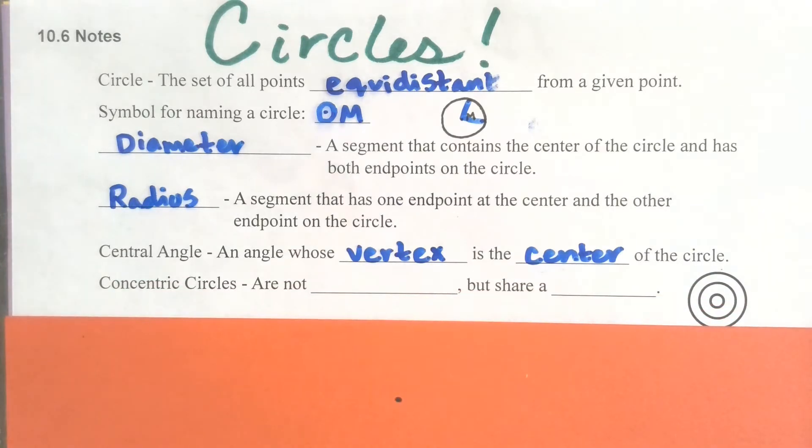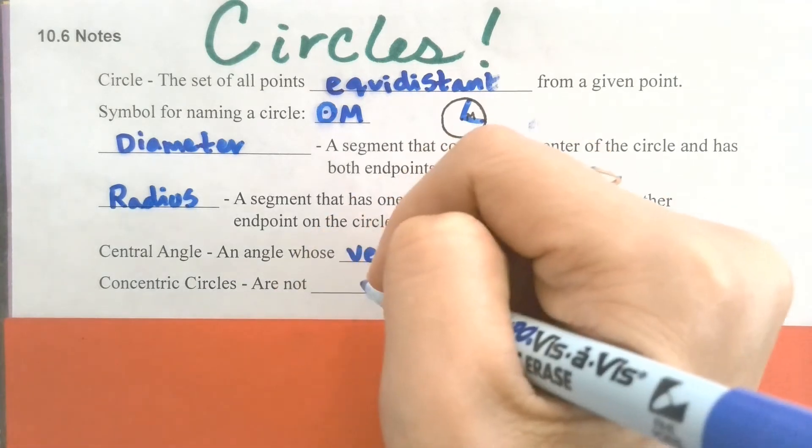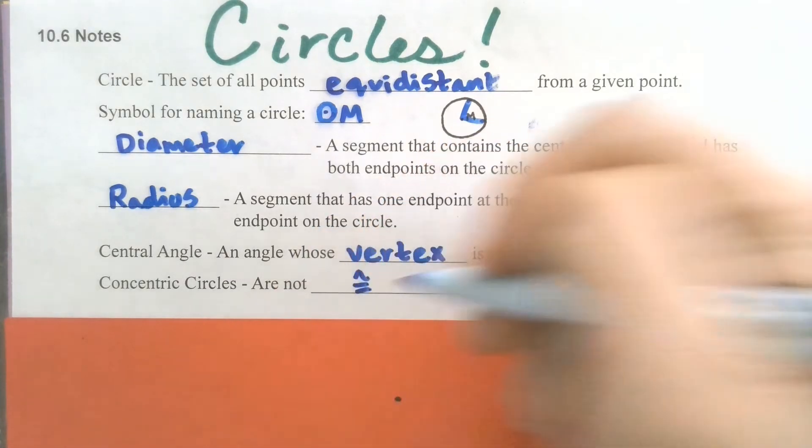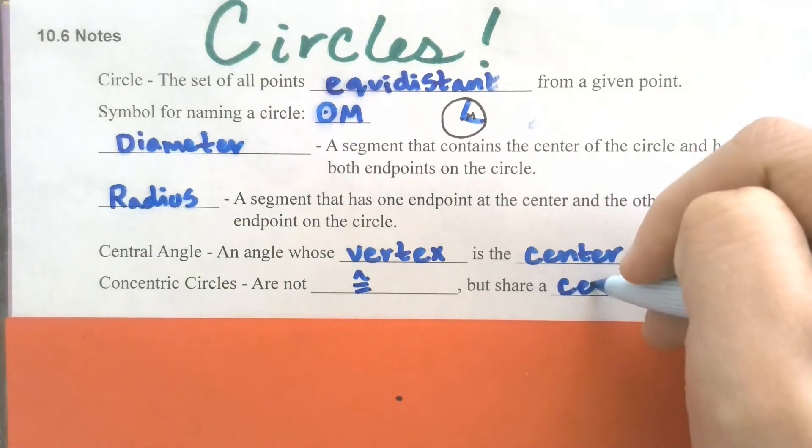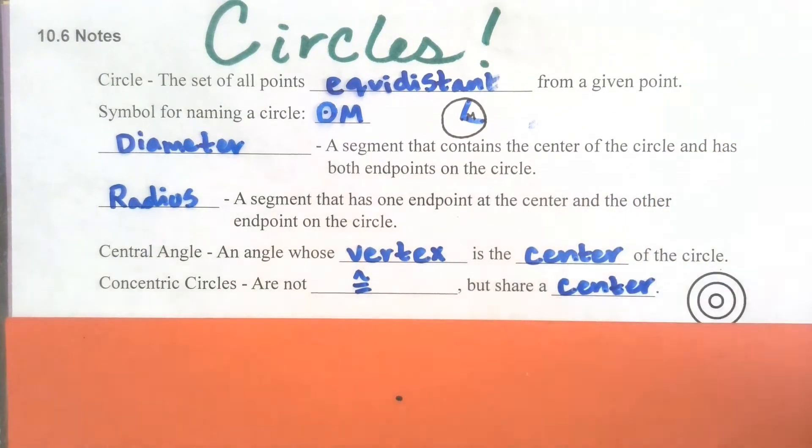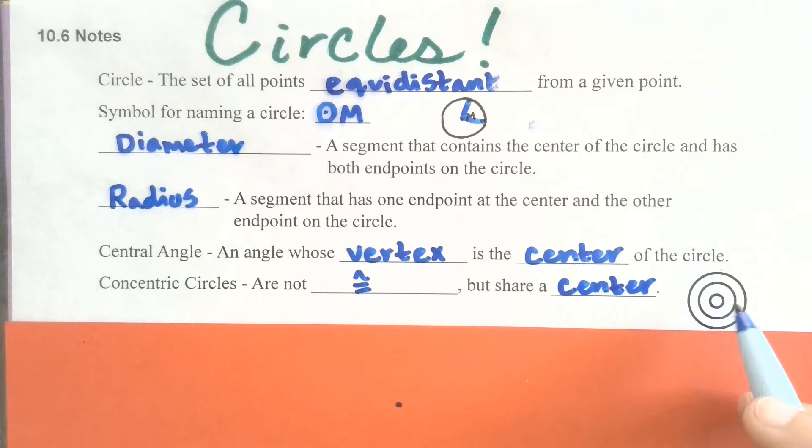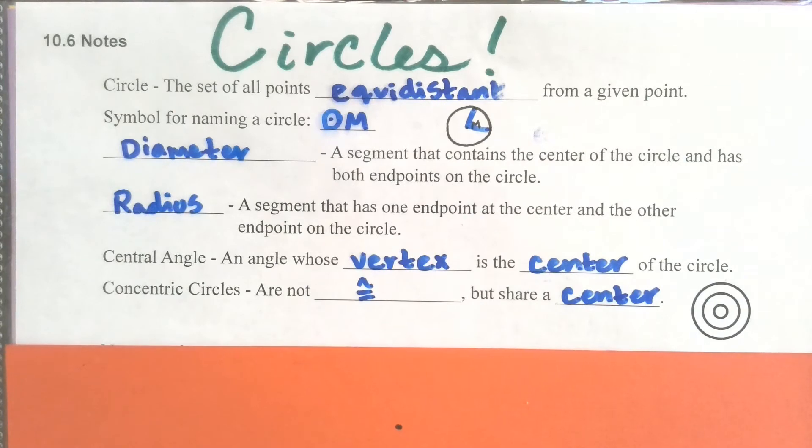In concentric circles, this one isn't used as much, but it's kind of interesting. They're circles that are not congruent but they share a center. So basically it ends up looking like a target if you have several concentric circles. They share that center, but they're not congruent to each other, so one is going to be slightly bigger than the other, kind of a ripple in a pond effect going on.